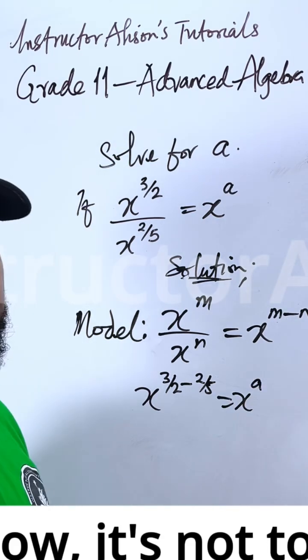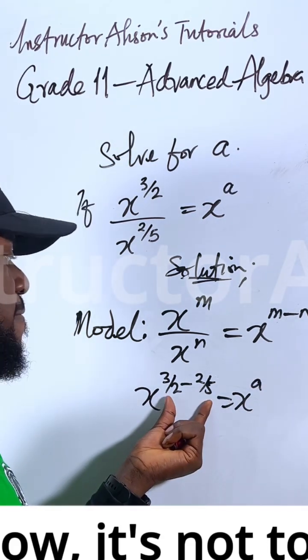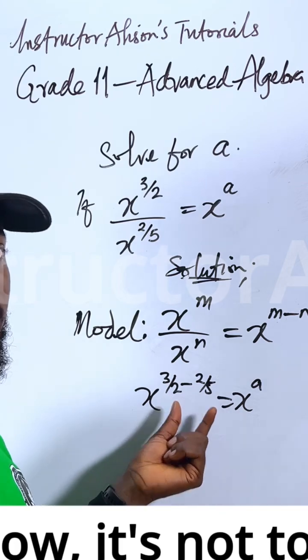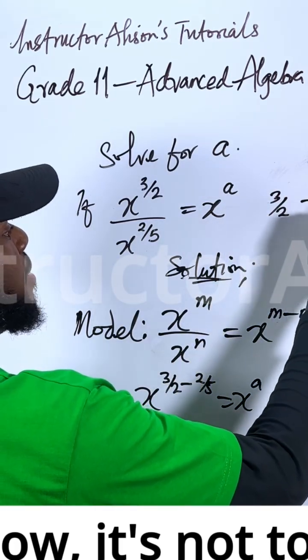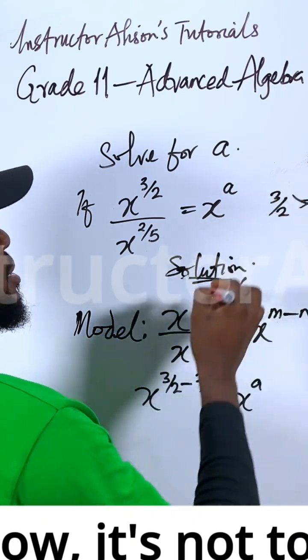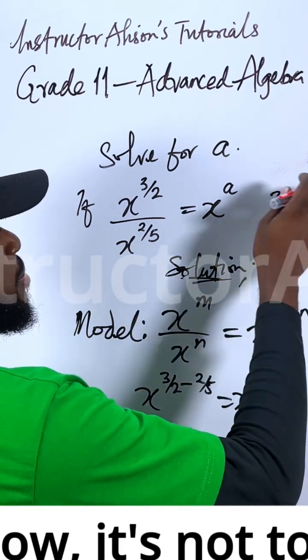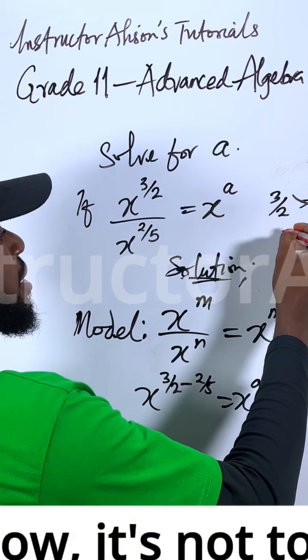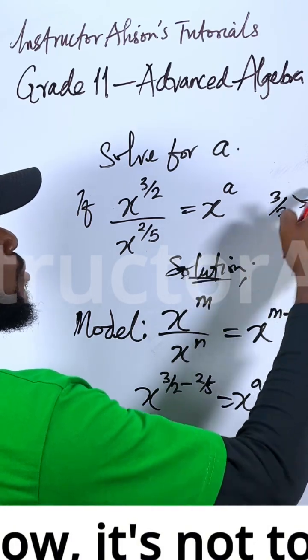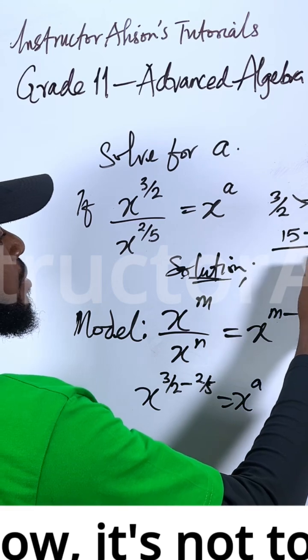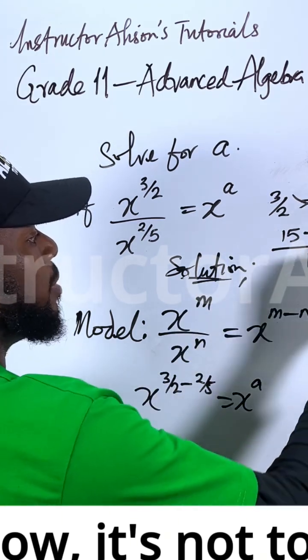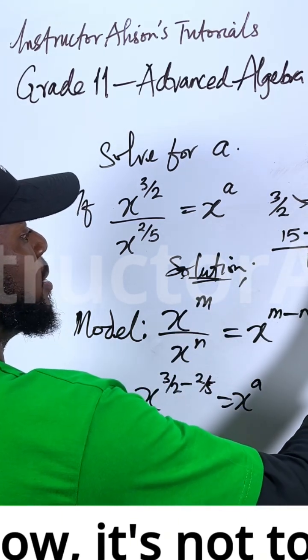So what do we do with this fraction? It's pretty simple. Let me use a quick method. If I have 3 over 2 minus 2 over 5, I can easily cross multiply. This multiplied by 5, then 3 gives us 15. Minus 2 multiplied by 2 gives us 4, divided by 2 multiplied by 5 gives us 10. What is 15 minus 4? That would be 11. 11 divided by 10.